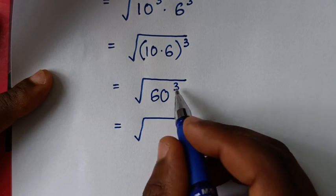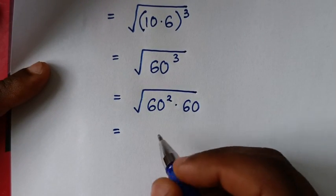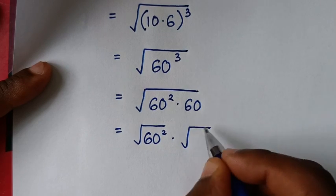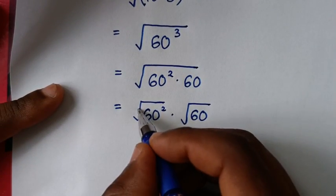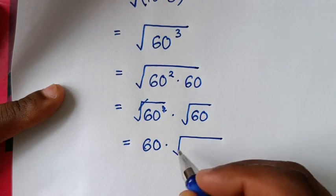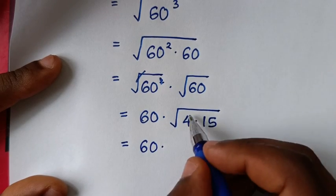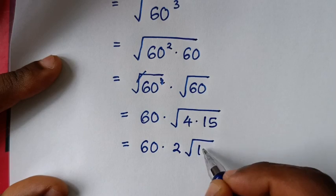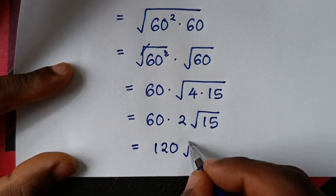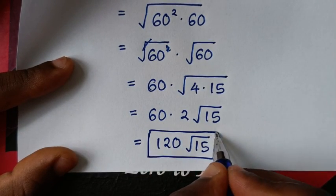Since we have a square root, we rewrite 60 to the power 3 as 60 squared times 60. Separating, it becomes the square root of 60 squared times the square root of 60. The square root of 60 squared equals 60, and the square root of 60 is the same as the square root of 4 times 15. So it equals 60 times 2 times the square root of 15, which is 120 times the square root of 15.